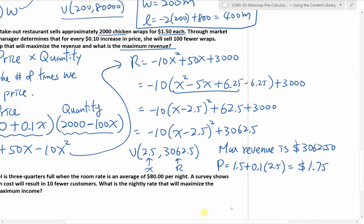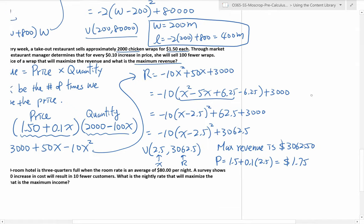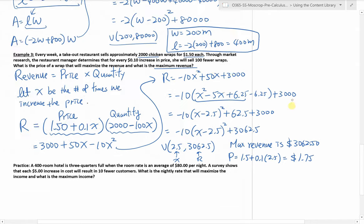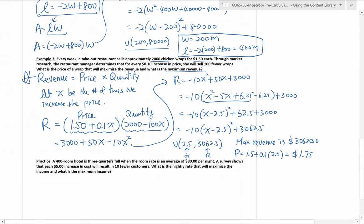This one is a little bit longer than the previous ones because first you need to understand the relationship between revenue, price, and quantity — revenue is price times quantity. Let X be the number of times we increase the price, come up with a quadratic equation, find the vertex of the quadratic function, and get your final answer.